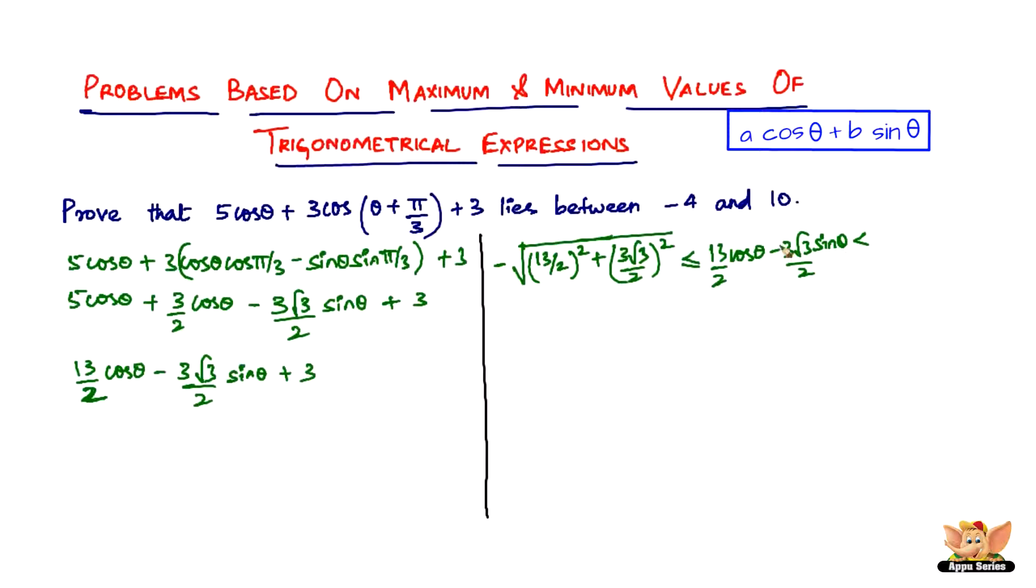Or rather, it lies between the minimum value and the larger value, which is the maximum value, which is again √(a² + b²). (13/2)² plus (3√3/2)².